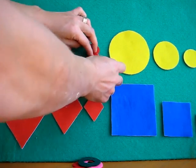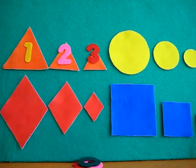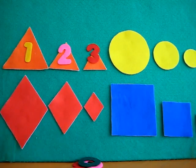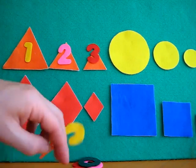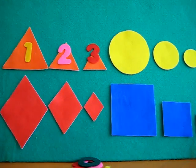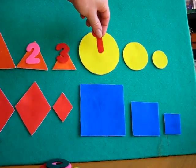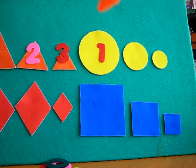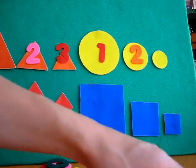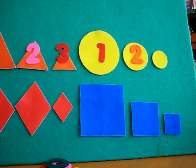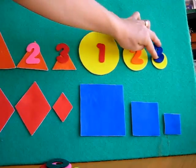So you go on learning your shapes, your colors, your sizes, and even your numbers. Let's count some more. Let's count the circles. One circle, two circles, and next we have three circles.